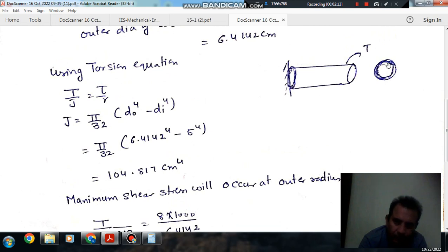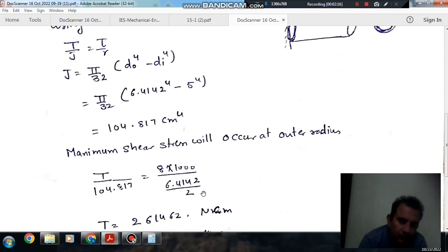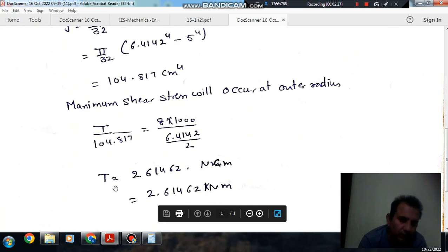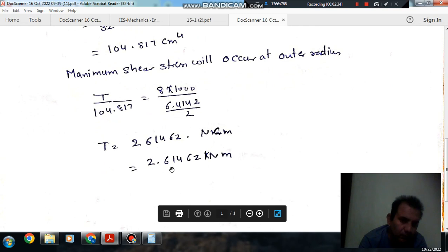The outer radius is 6.4142 divided by 2, and the maximum shear stress is 8 kN per cm² or 8000 N/cm². So T comes out as 261,462 N·cm or 2.61462 kN·m.